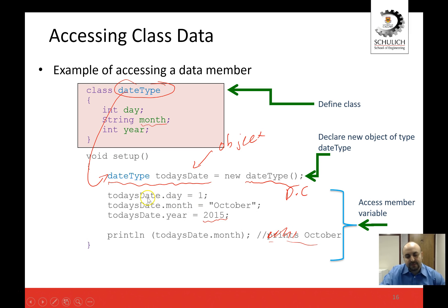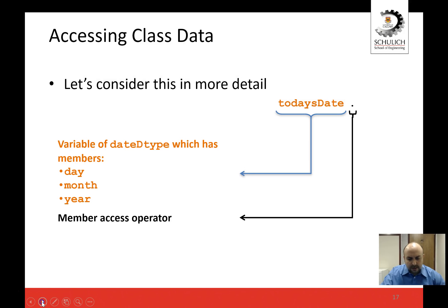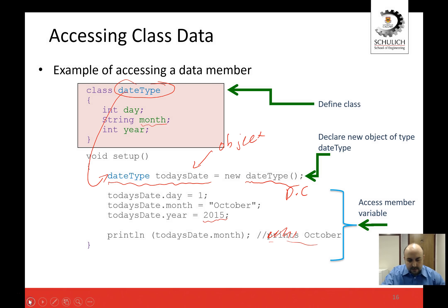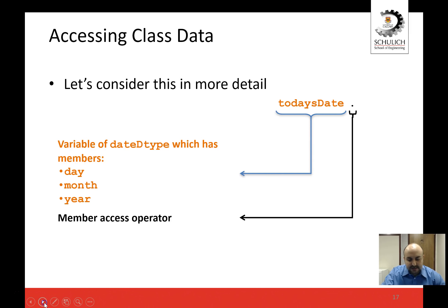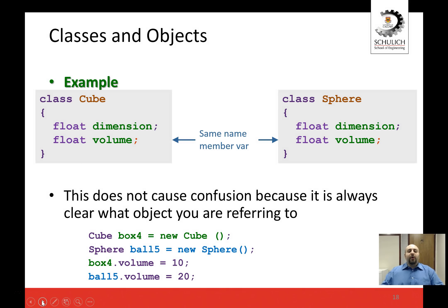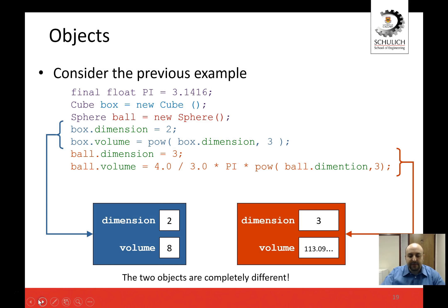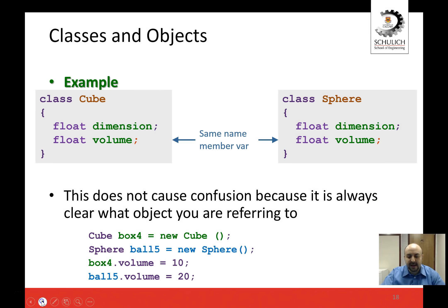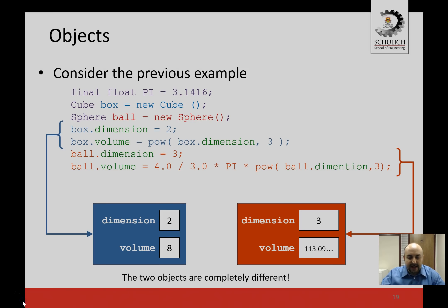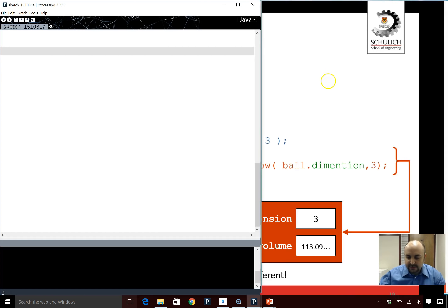Accessing member variables is done simply using the dot operator. So today's date is the name of the object — not the name of the class. You use the name of the object, dot, then the member variable, for example dot year. That's how it works using the dot operator. I have a couple of examples in my slides and I'm going to do similar examples interactively using Processing.